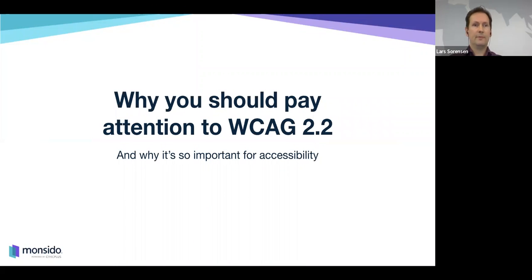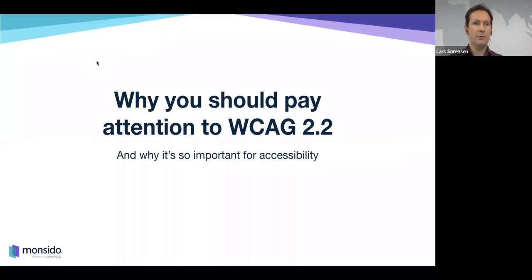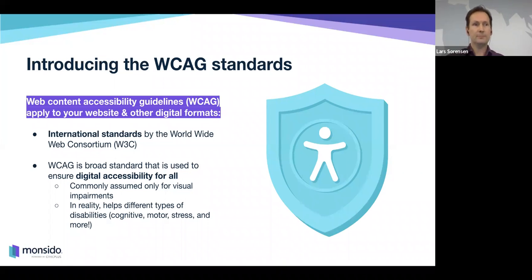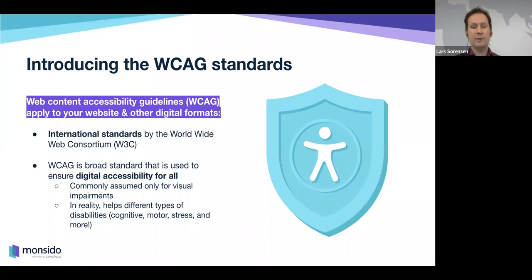So why is WCAG important? Why is this new version important? WCAG — the Web Content Accessibility Guidelines — is an international standard, a set of rules or success criteria you can follow to make sure your web content is accessible to as many people as possible. A common misconception is that accessibility is only about blind or visually impaired people, but the WCAG standard is much broader — it's built to include as many disabilities as possible.